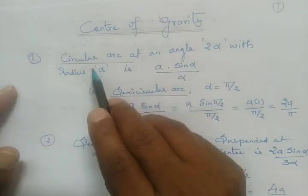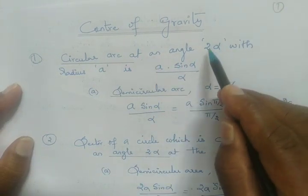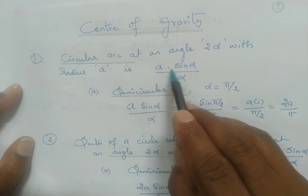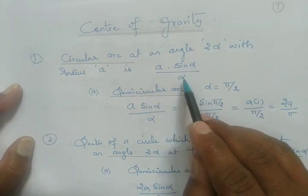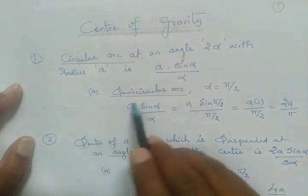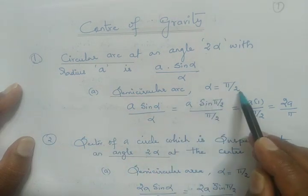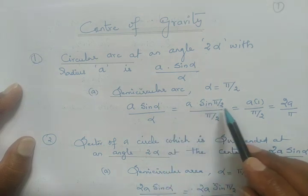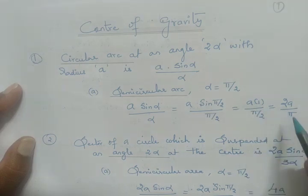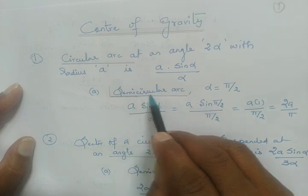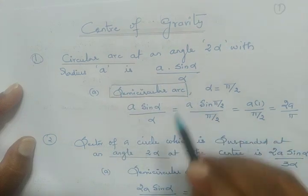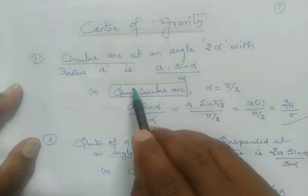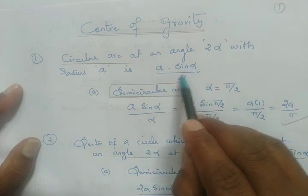First, the circular arc at an angle of 2α with radius A, whose formula is A·sinα/α. If you have a semicircular arc, alpha becomes π/2. You replace alpha by π/2, that becomes A·sin90/(π/2), and sin90 equals 1, so you get 2a/π. So for a semicircular arc the answer is 2a/π, and for a circular arc the center of gravity is A·sinα/α.